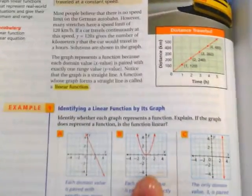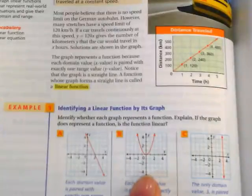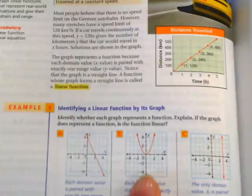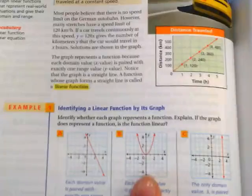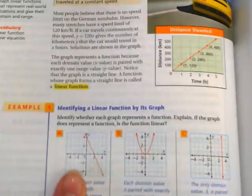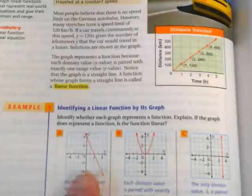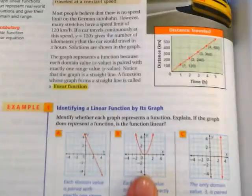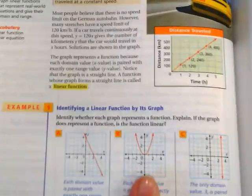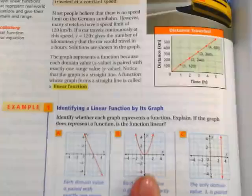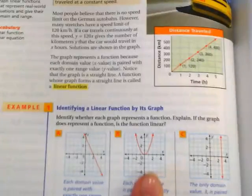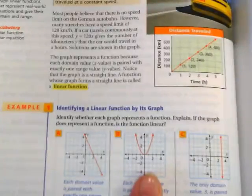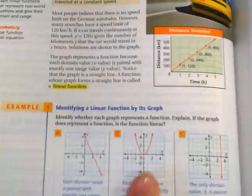What about example two? It's not a linear function, but it is a function. So this one, in answering this question, would get a yes and a yes. This would get a yes and a no. It passes the vertical line test, but is it a straight line? No. This one was graphed with an exponent. This is an X squared something. That's how we get that parabola.